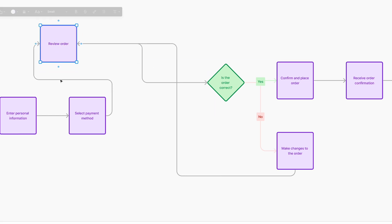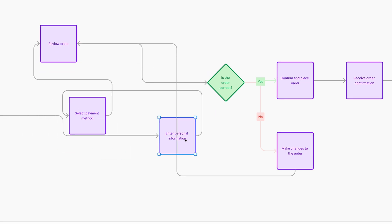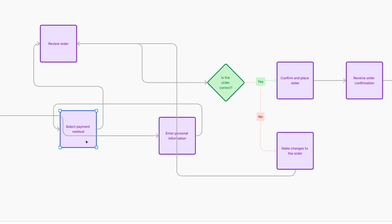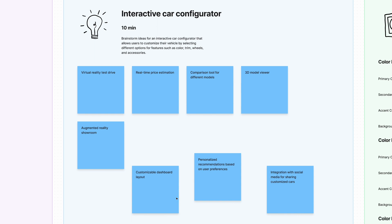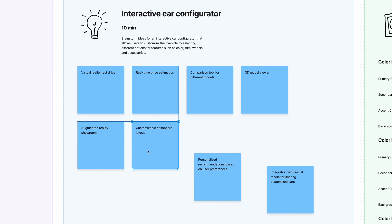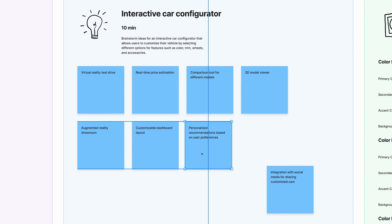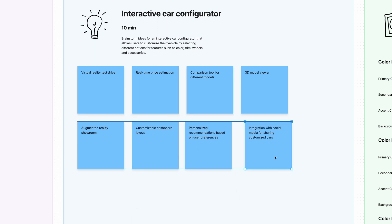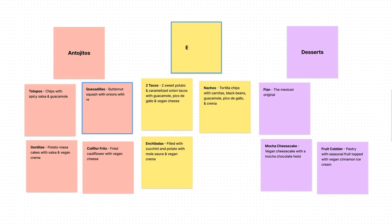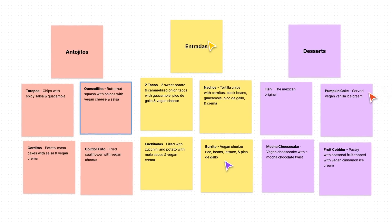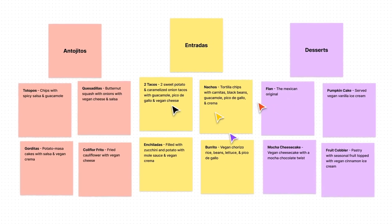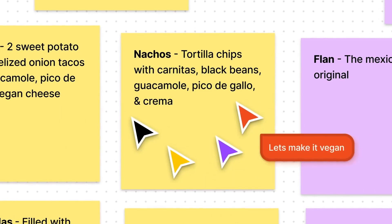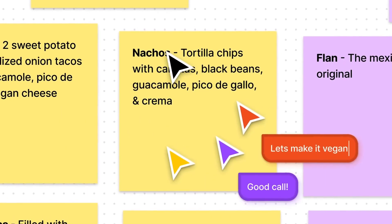FigJam files are digital whiteboards filled with features for finding and sharing ideas. They offer a fantastic space for solving problems, arranging your thoughts and aligning with others. You can use FigJam for free with a starter plan — the link is in the description.